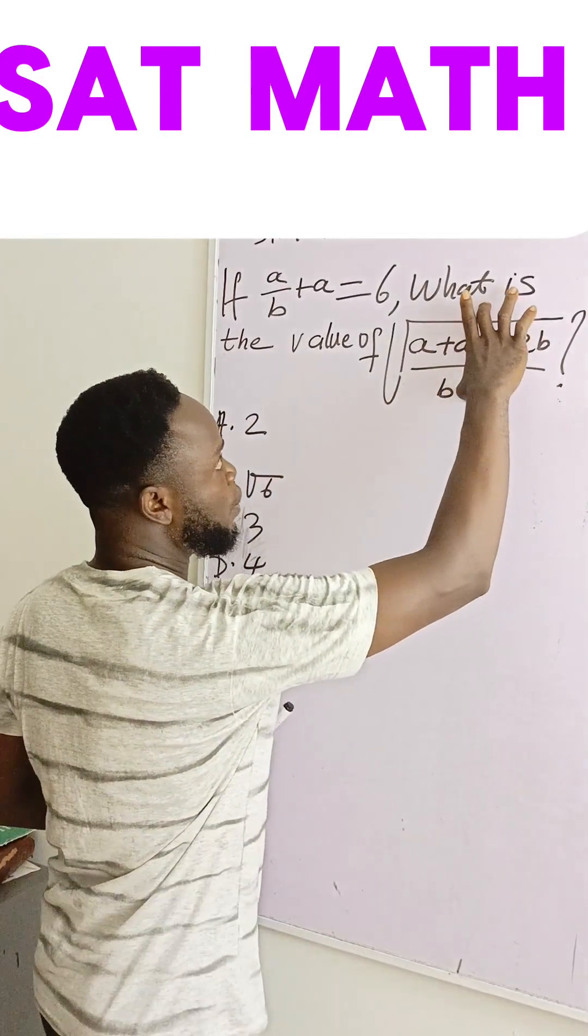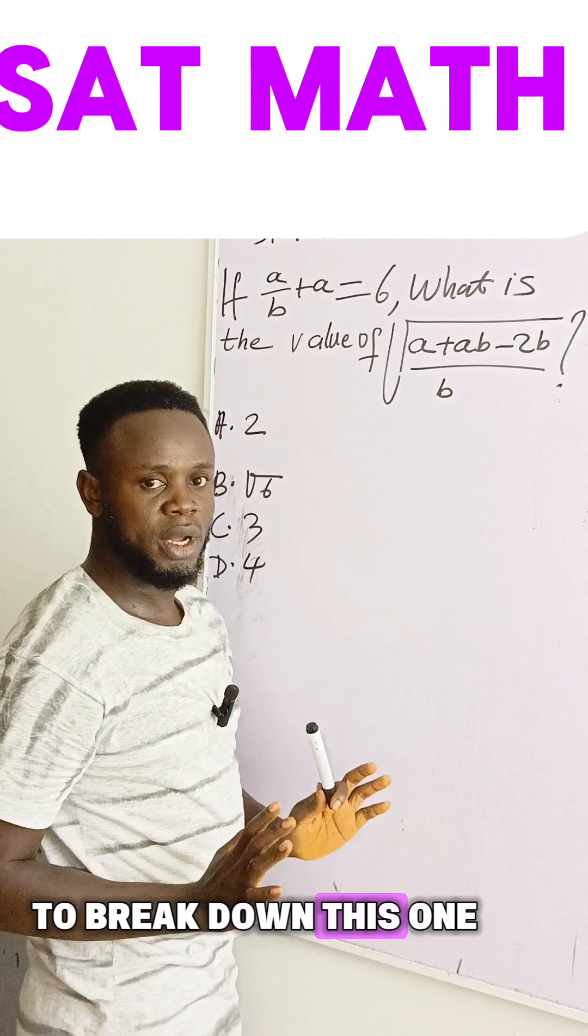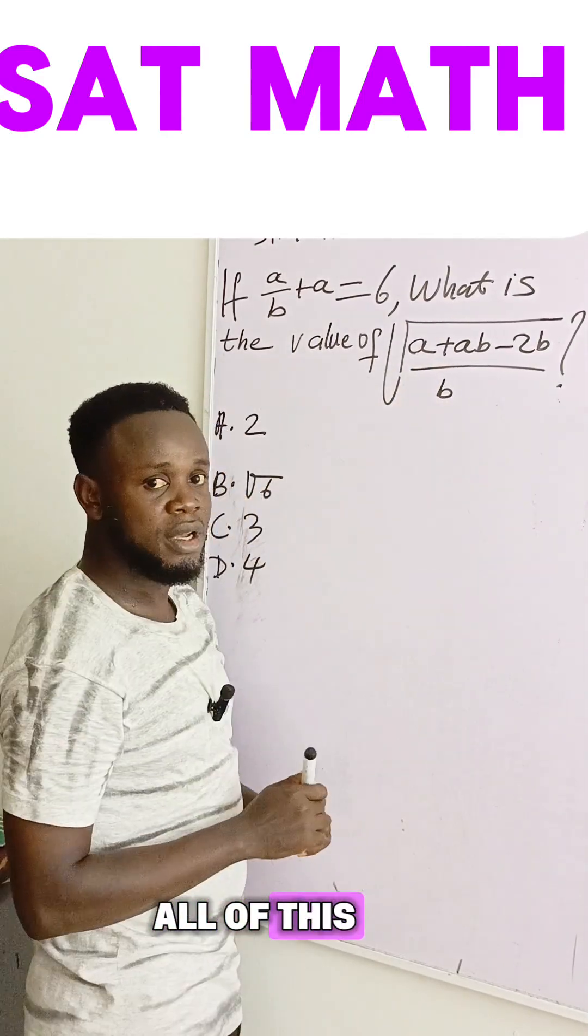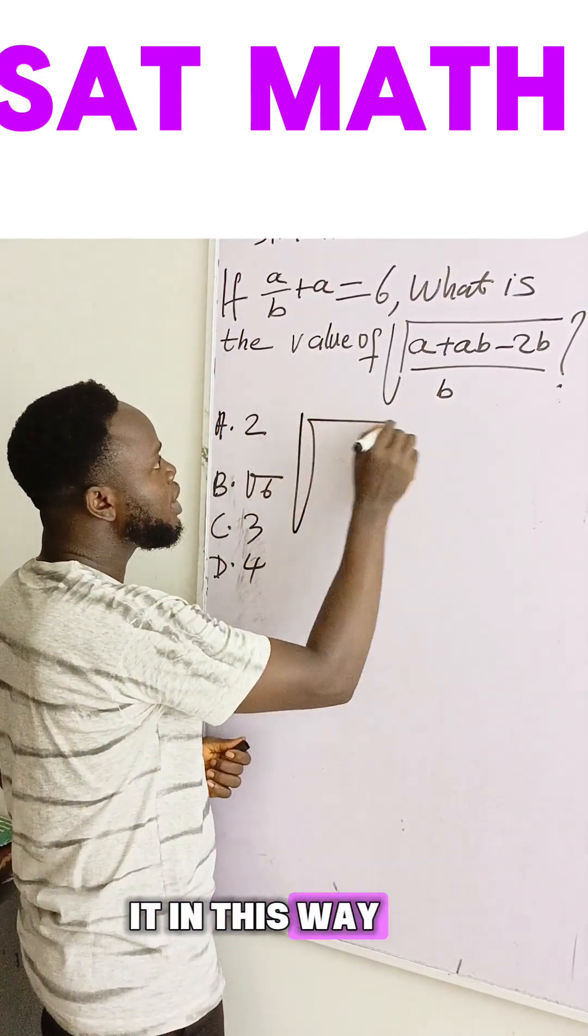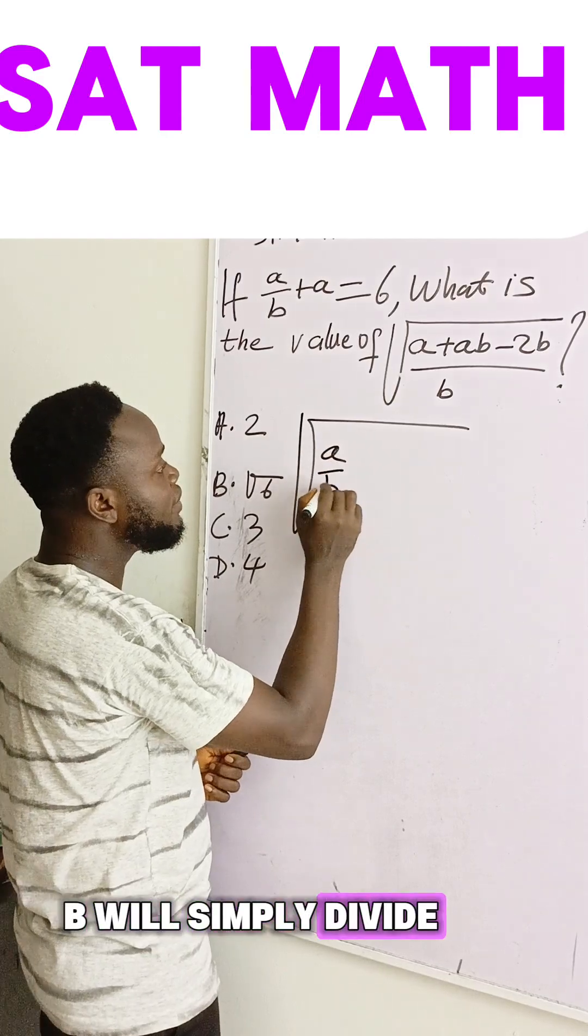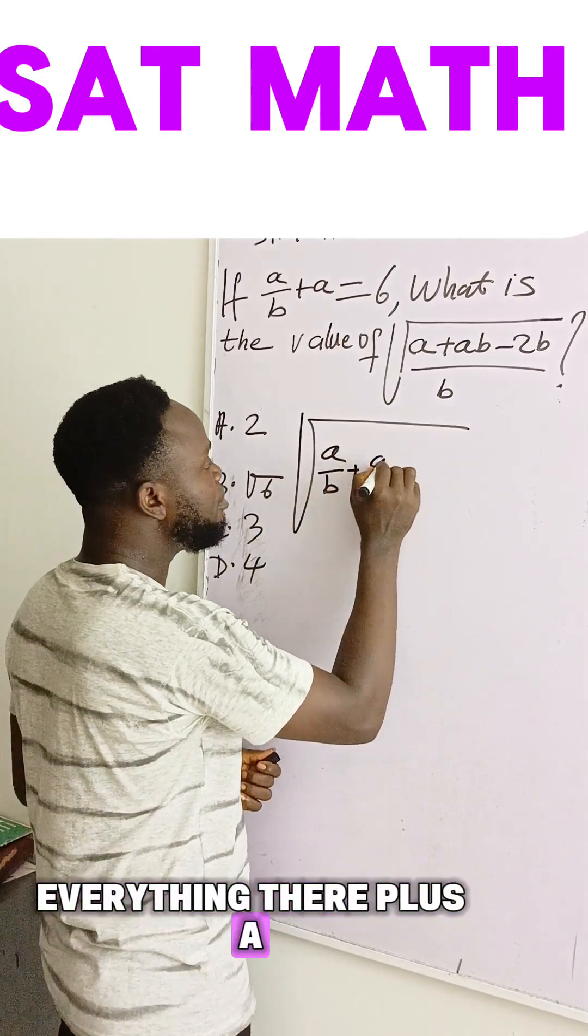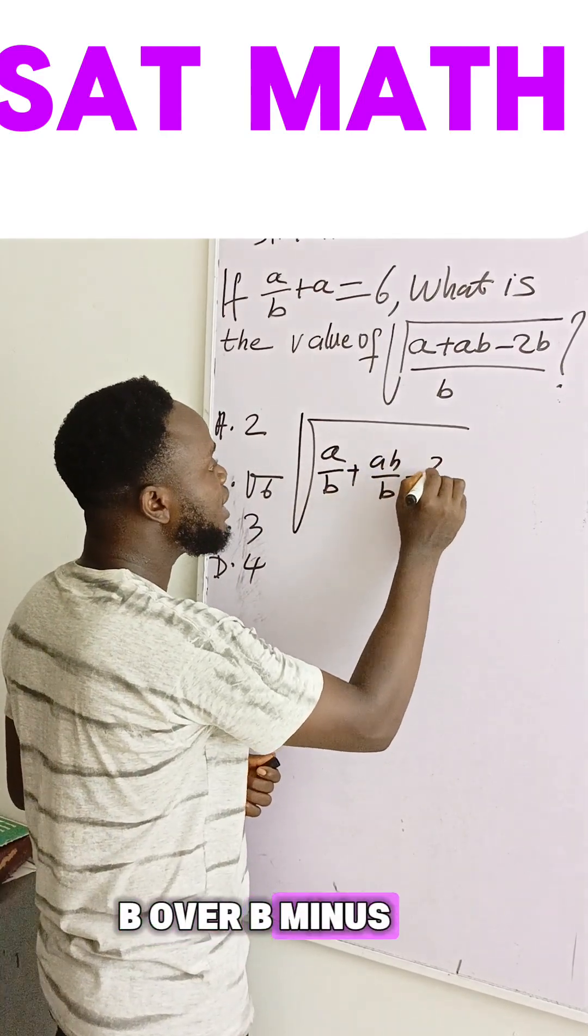Then what we are going to do is break down this one. This b is dividing all of these things, so we can write it in this way: b will simply divide everything there, plus ab over b, minus 2b over b.